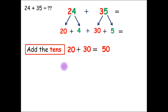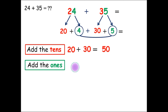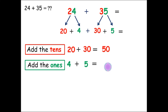Then, we will add the ones. The ones are 4 and 5. So, 4 plus 5 equals 9.